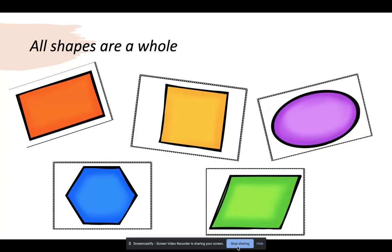Remember that all shapes are a whole, meaning they are not cut. We have a rectangle, a square, an oval, a hexagon, and a rhombus.